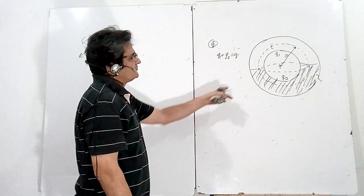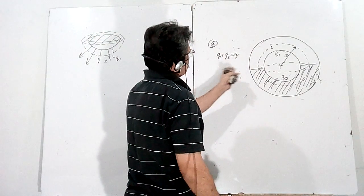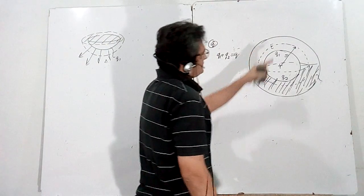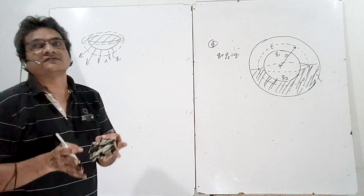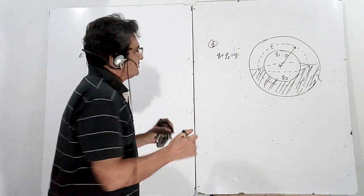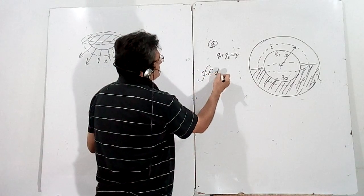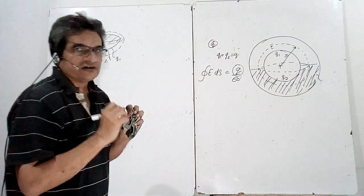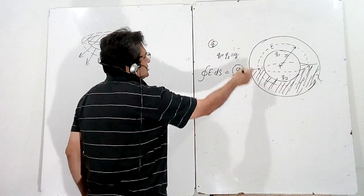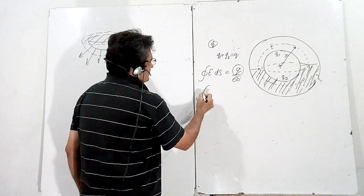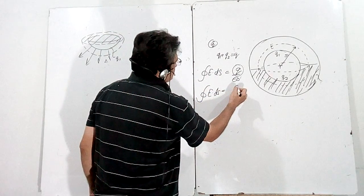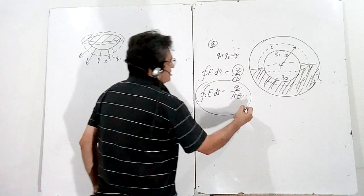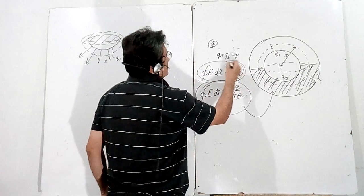This is the key issue in the problem; once resolved, the rest is straightforward. You apply Gauss's law for the two regions: one where there is no dielectric, and one where there is a dielectric. For vacuum, Gauss's law is E·dS = Q_enclosed / ε₀. For the dielectric, Gauss's law becomes E·dS = Q_enclosed / (kε₀) — this is called Gauss's law for the dielectric.